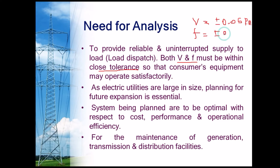The quality of power is determined by two factors: voltage (V) and frequency (F), which should be maintained within a close tolerance value. The voltage tolerance is plus or minus 0.05 per unit, and the frequency tolerance is plus or minus 0.5 hertz. In India, we use 50 hertz, so the allowed range is 49.5 to 50.5 hertz, though 49.5 is considered very low and we must maintain values within close tolerance.